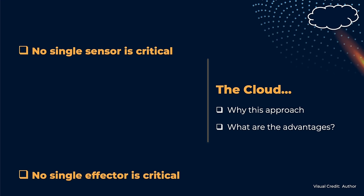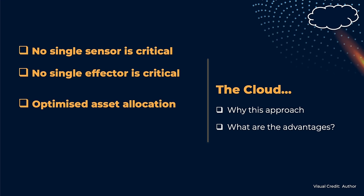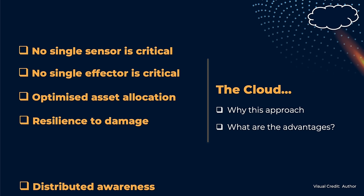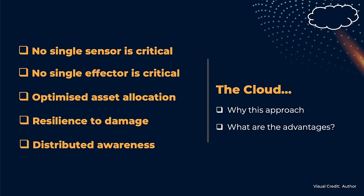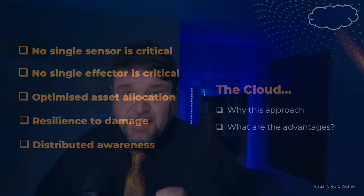Basically, a commander goes shopping for capabilities rather than assigning a mission to a group of assets. There are various advantages: no single aircraft or sensor should be critical for success, meaning the cloud is resilient. Additionally, the use of each specific asset is optimized, and every asset has in principle a picture of the global situation — which is definitely useful to do the right thing if orders don't make sense.